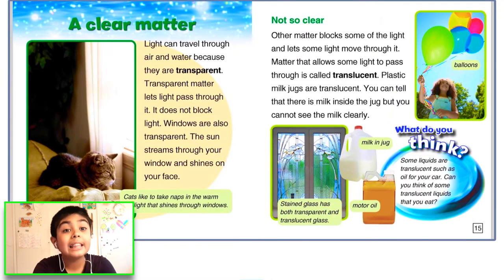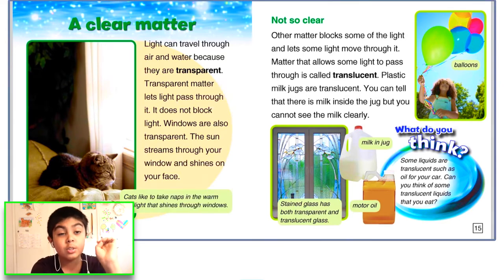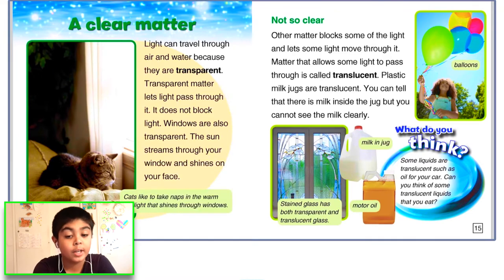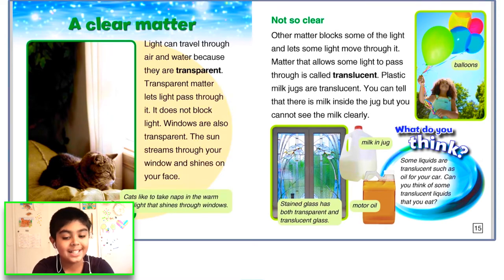A clear matter. Light can travel through air and water because they are transparent. Transparent means you can see through it. Transparent matter lets light pass through it — it does not block light. Windows are also transparent. The sun streams through your window and shines on your face.